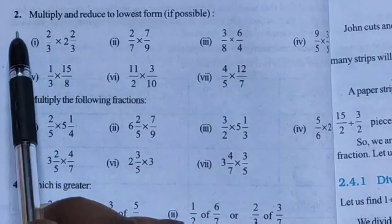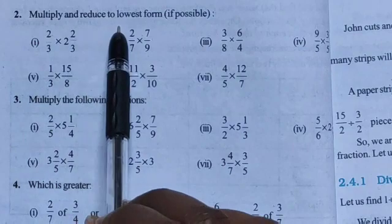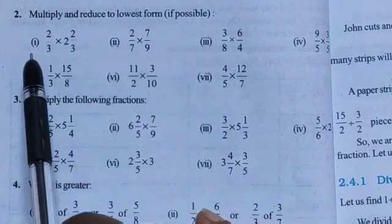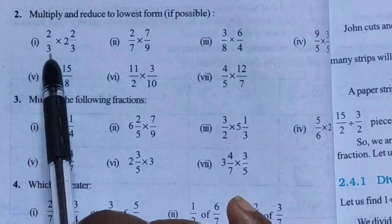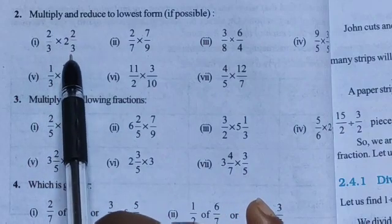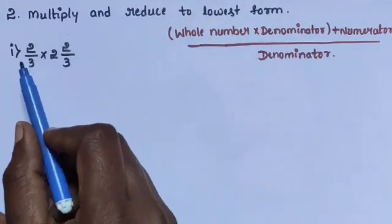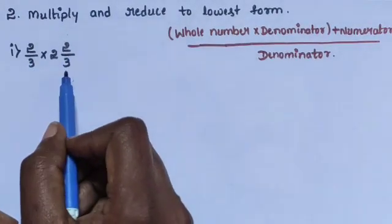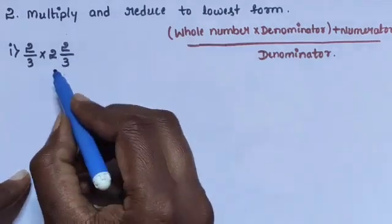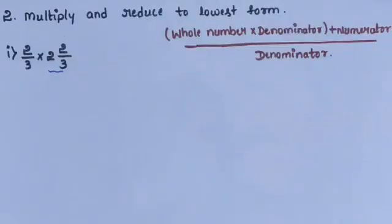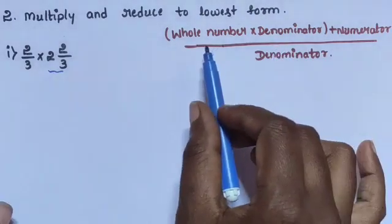Coming to question number 2: multiply and reduce to lowest form if possible. Sub-question 1: 2/3 into 2⅔. So 2⅔ is a mixed fraction; convert into an improper fraction using the formula.